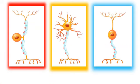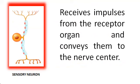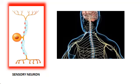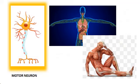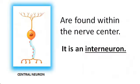According to function, neurons are classified into sensory, motor, and central neuron. A sensory neuron receives impulses from the receptor organ and conveys them to the nerve center. Receptor organs are those that receive the electrical signals or impulses — these are the different sense organs in the body. There are two nerve centers in the body: the brain and the spinal cord. A motor neuron receives impulses from the nerve centers and conveys them to the effector organ. Effector organs are those that execute the response — these are the muscles and glands of the body. Central neurons are found within the nerve center and serve as the connecting link between a sensory neuron and a motor neuron.